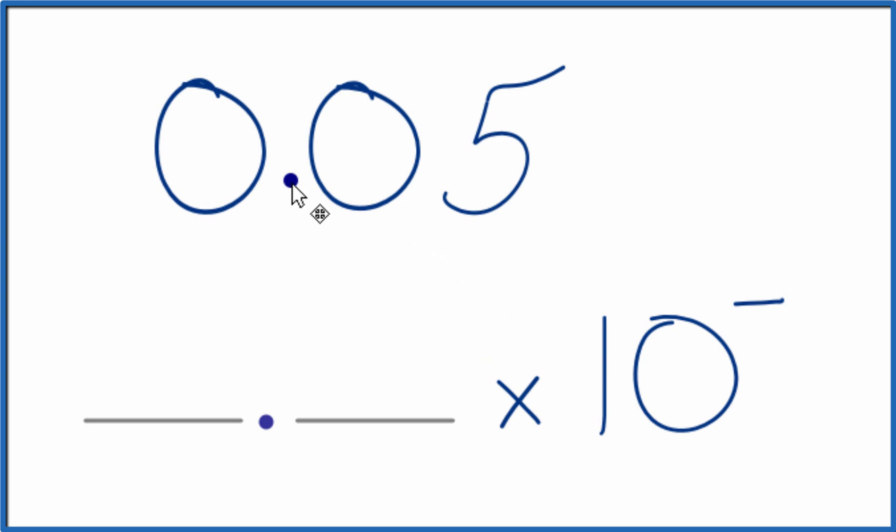So let's do this. Let's move the decimal point 1, 2. Now we have our whole number. Since we moved it two places, this is going to be a 2 here, and it's negative 2 because we started with that 0.05.